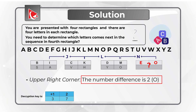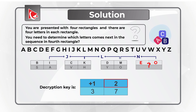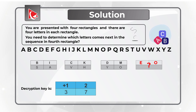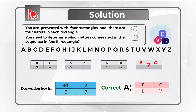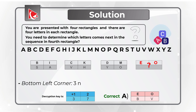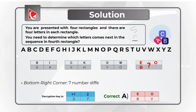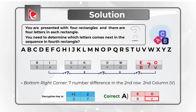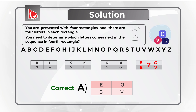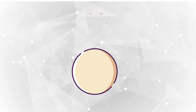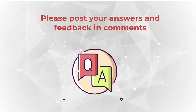The increment of 2 matches the second number in our decryption key. Looking at the answers, the correct choice is Choice A, because the upper row letters E and O appear only in that choice. The question is designed so you can continue the logic: the bottom left corner has a 3-number difference, and the bottom right corner has a 7-number increment, giving letter V. So the correct choice is Choice A.